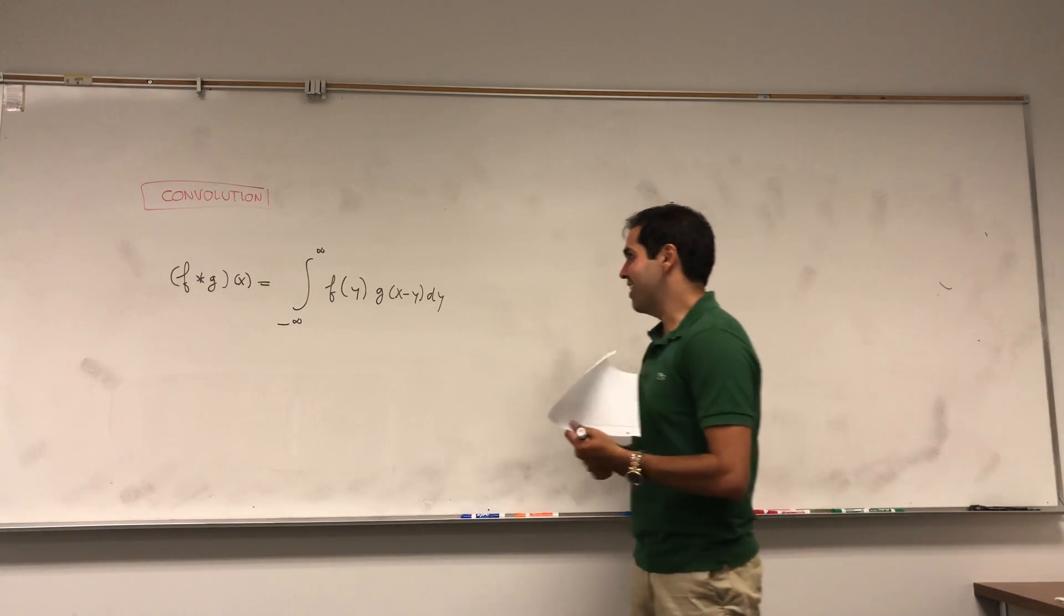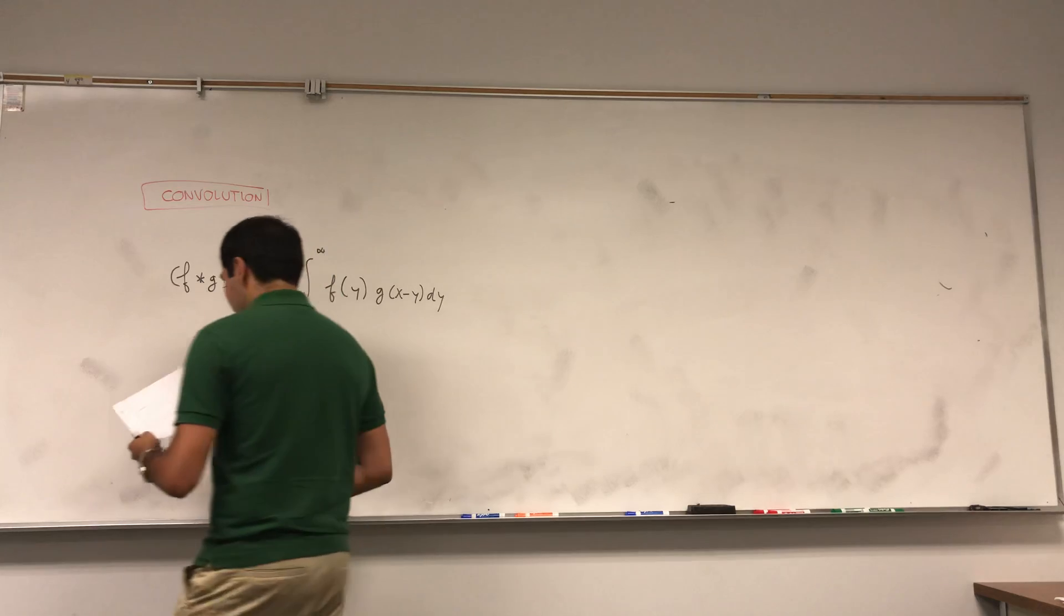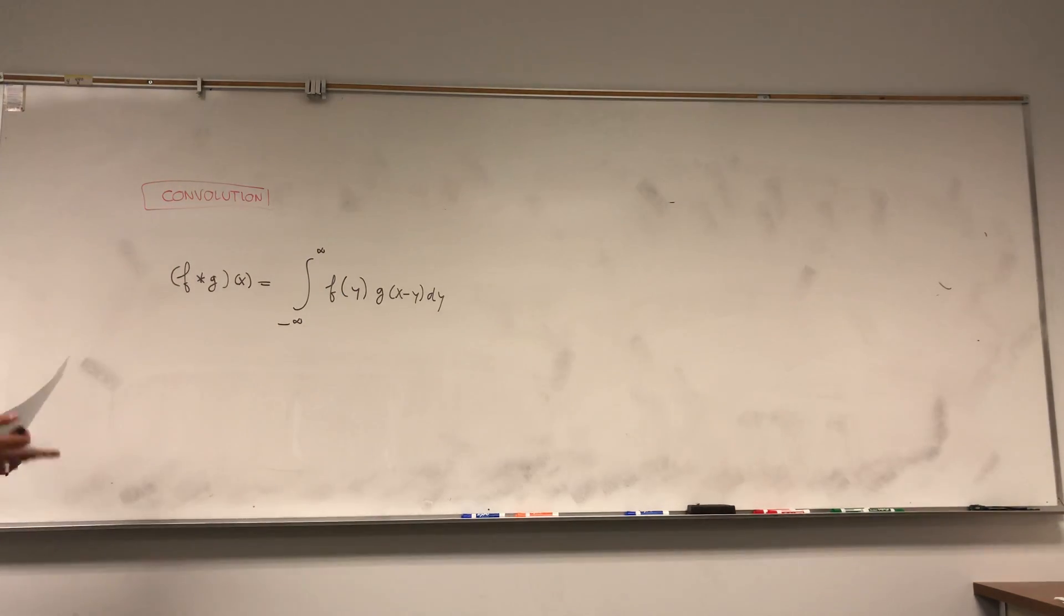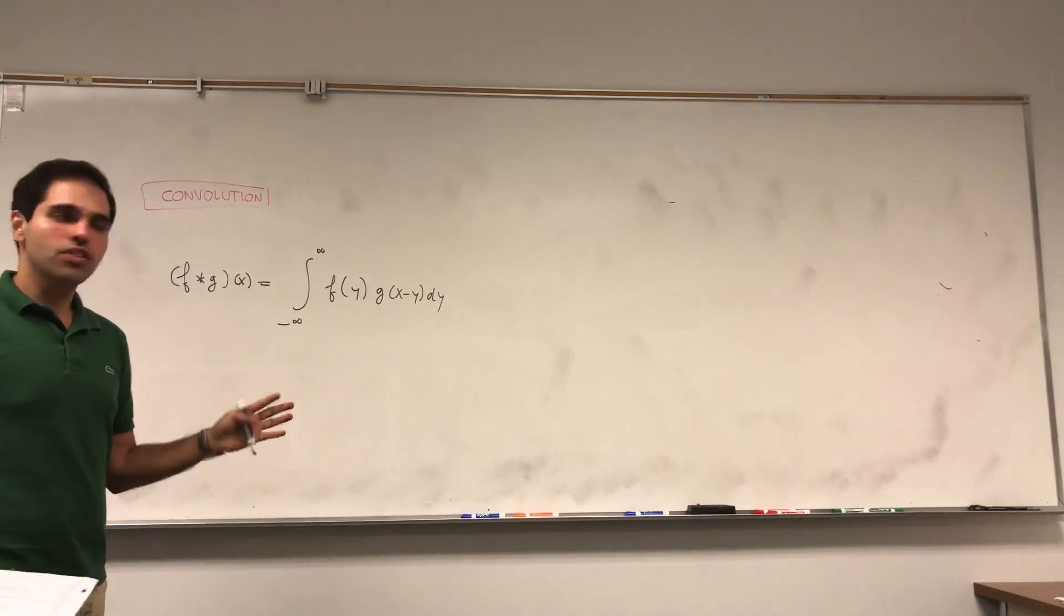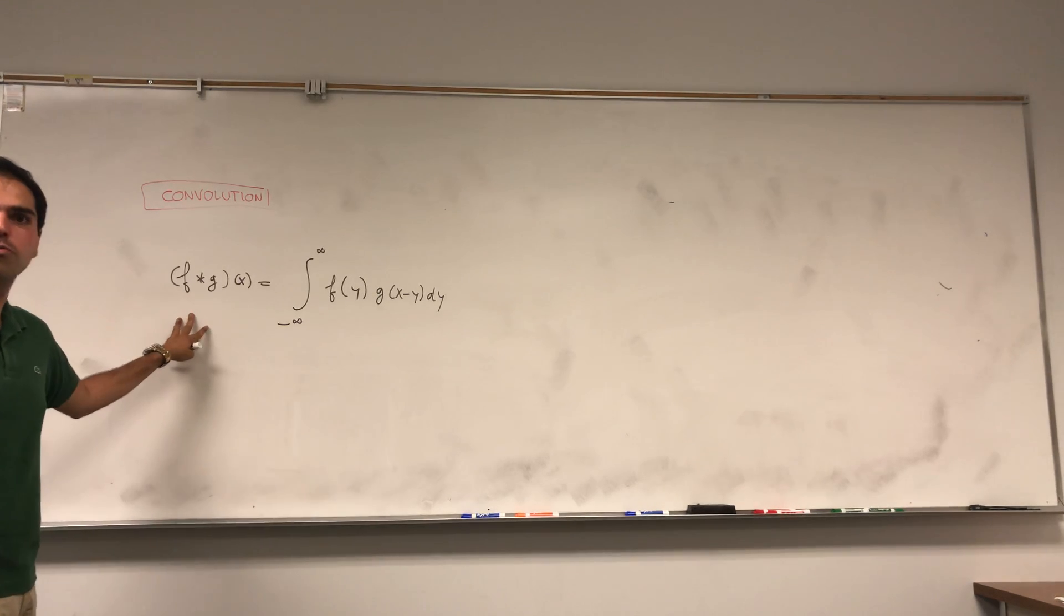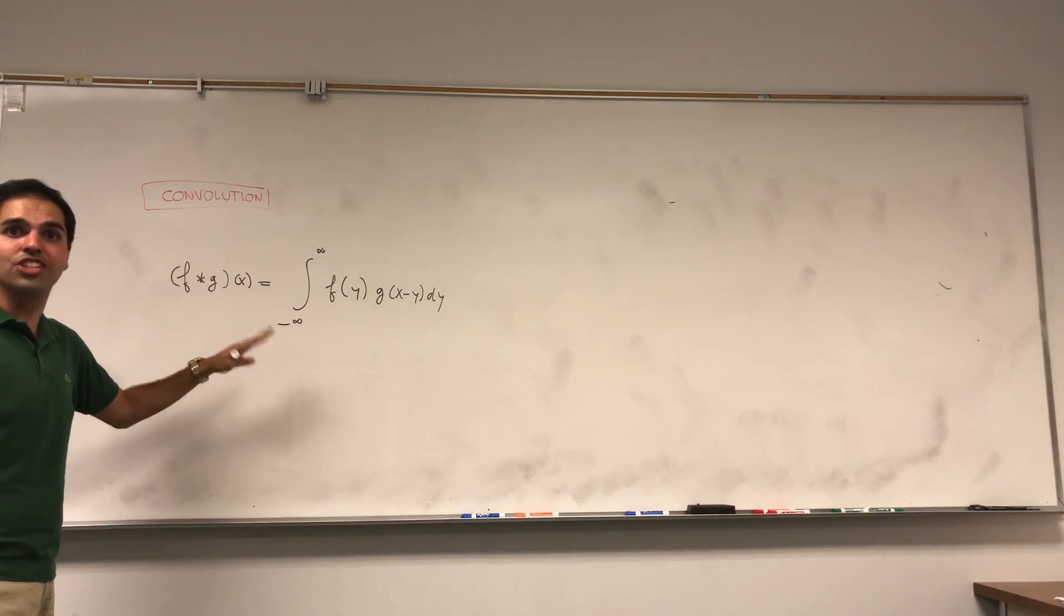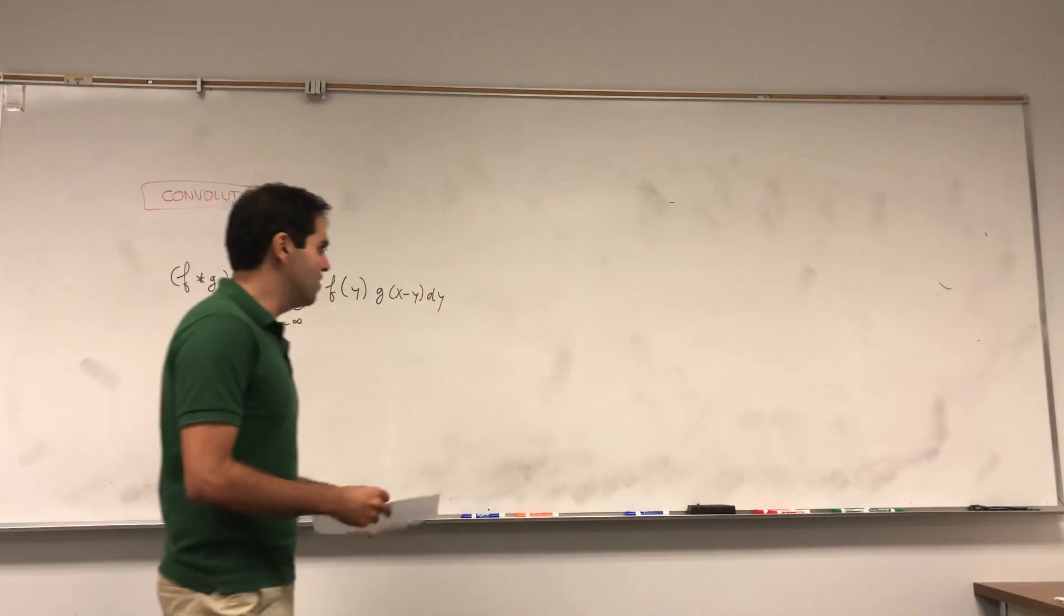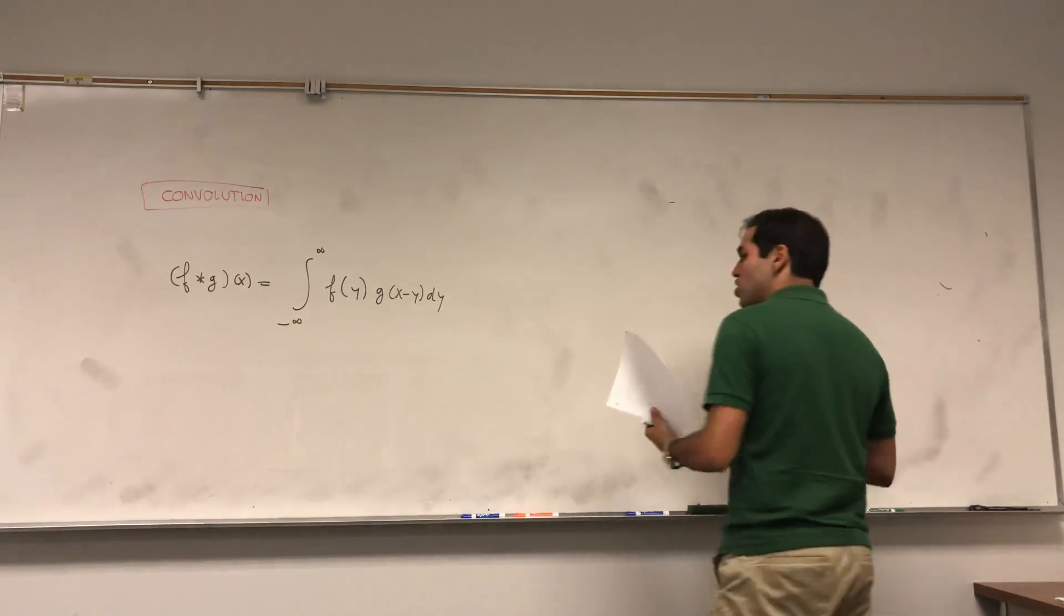And I'm claiming that convolution is really the continuous analog of multiplication. First of all, in terms of Fourier transforms it is, because the Fourier transform of f convolved with g is just f hat times g hat. So it is a multiplication, but I want to show it to you in more elementary ways.